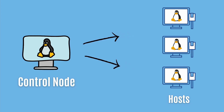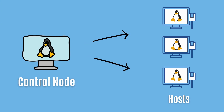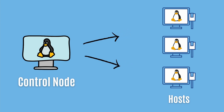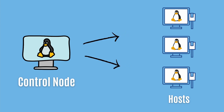The control node manages configuration on those servers — like installing software or managing configuration files. The way the control node knows the details of the servers is through a file called the inventory file. The inventory file contains the IP addresses of the servers, groups of servers, or host names, plus connectivity details and usernames. That's an important file in Ansible — you specify the inventory file, connect to the servers, and then install software or configure them.